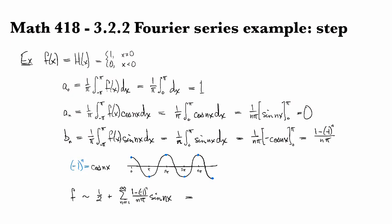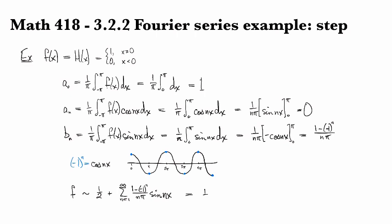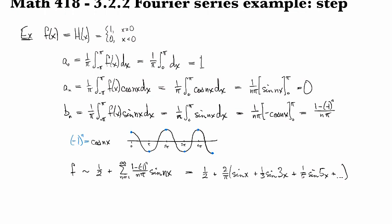If we write out what these things look like, here's just a couple more forms that you might see an answer to something like this written in. Notice that the ones with odd n are the only ones that survive. The even n's drop out. So we have sine(x) plus 1/3 sine(3x) plus 1/5 sine(5x) and so forth.